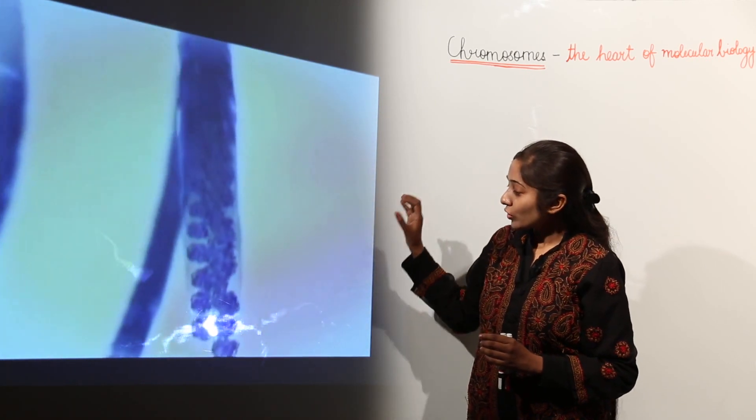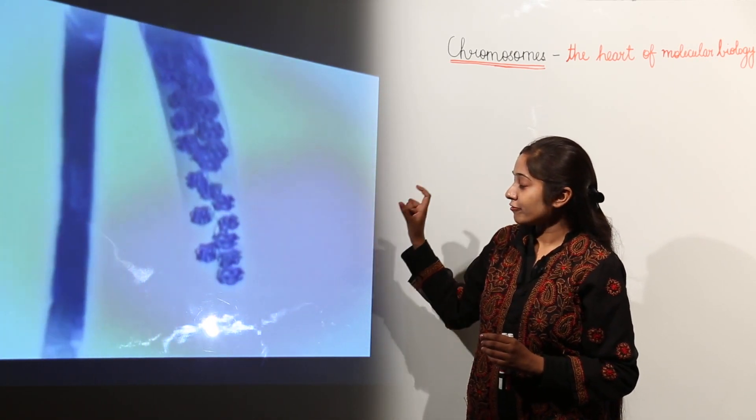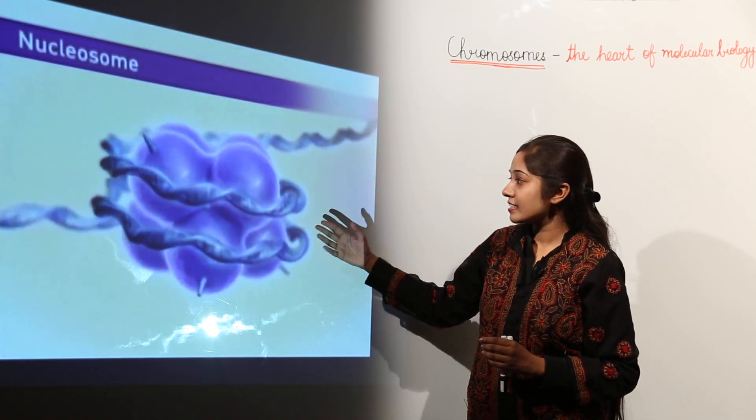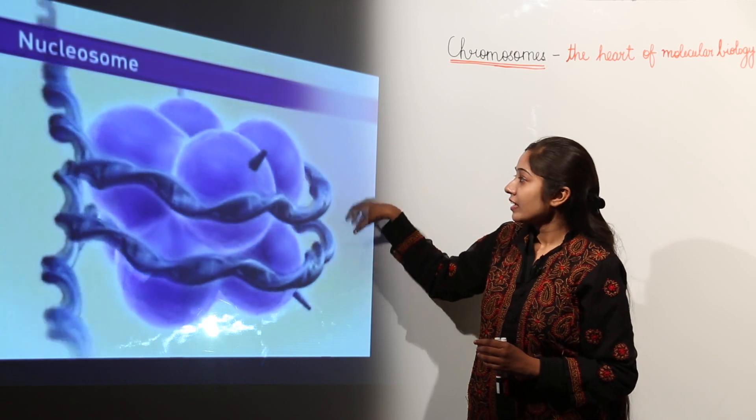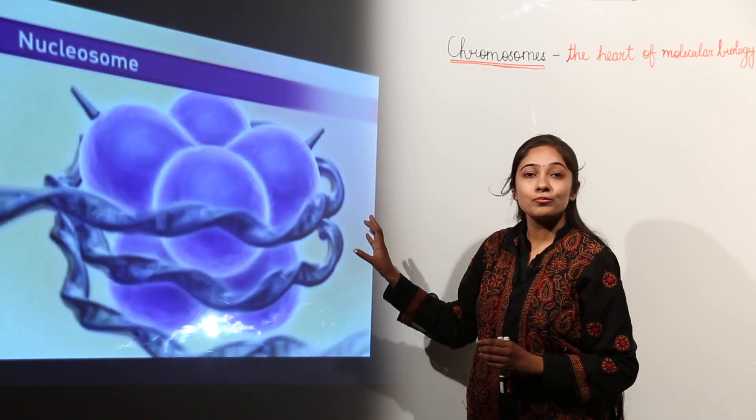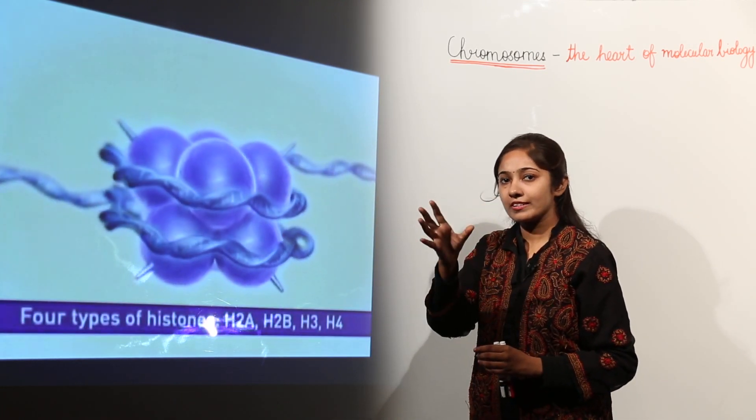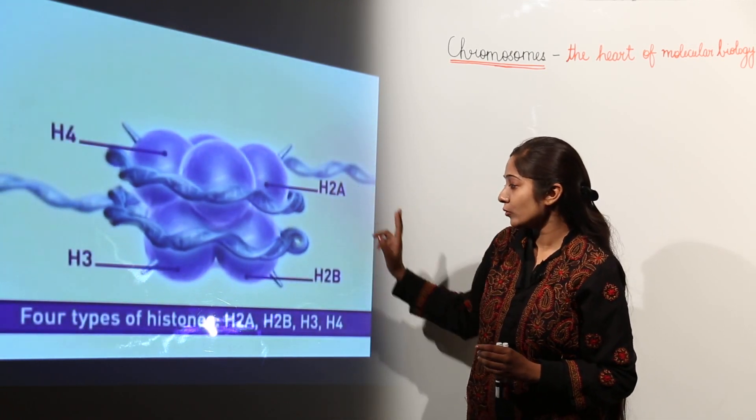So chromatin material is formed of units known as nucleosomes, and one nucleosome has a coiled DNA with eight histone protein subunits. This coiled DNA is 146 base pairs, around 146 base pairs, and histone protein units.